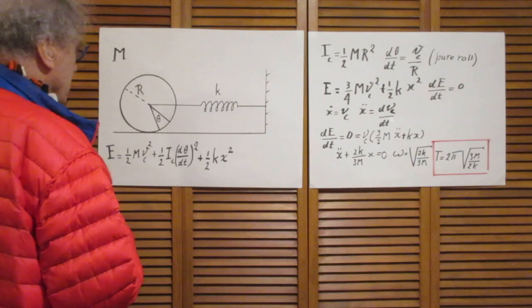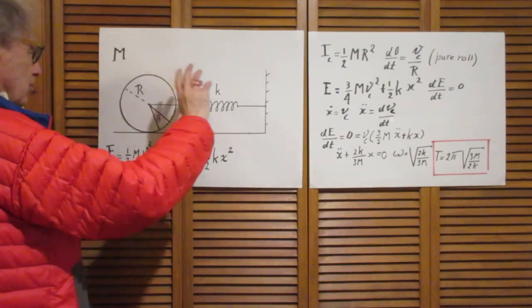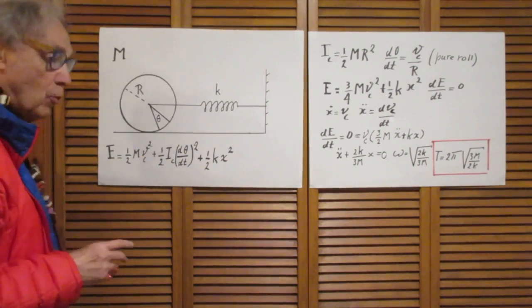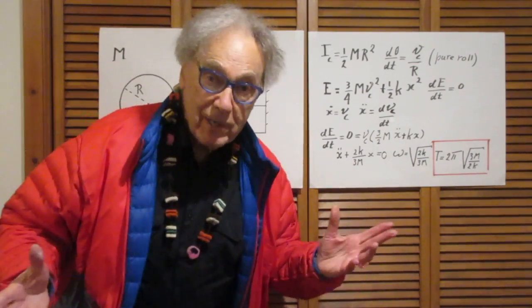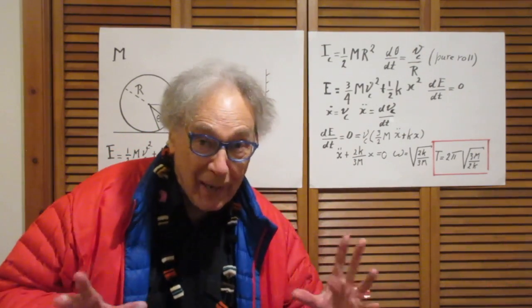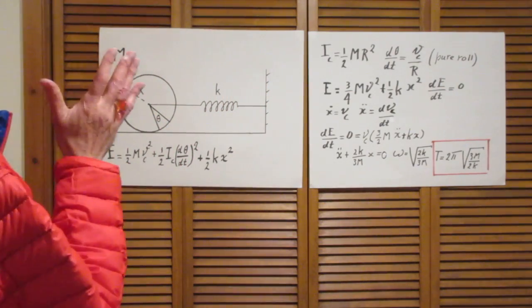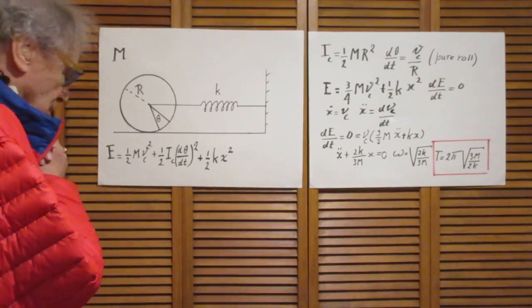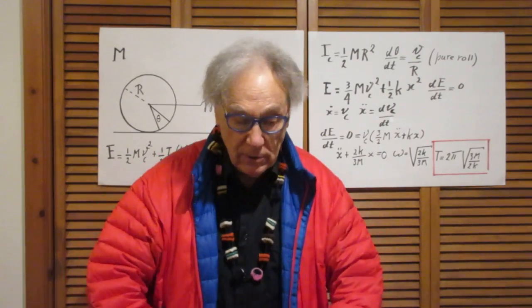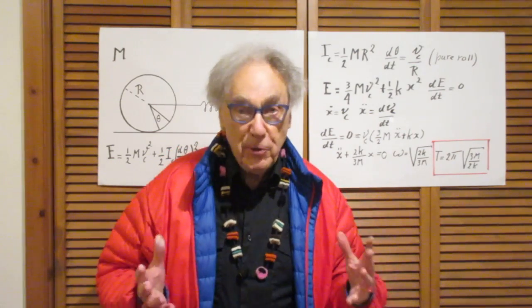And the question now is when we take this object, move it to the side and let it go, it will start to oscillate, roll and move back and forth. And that motion, as you will see, is obviously a simple harmonic motion. You don't have to be a rocket scientist to predict that. So when you have to find the period or the frequency of a simple harmonic motion, in principle there are two very common ways that we do that.